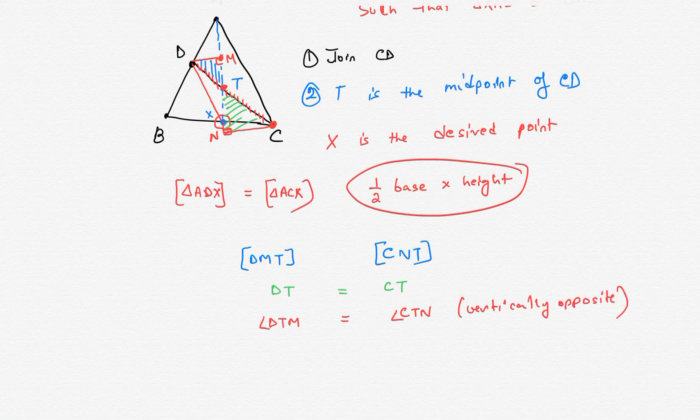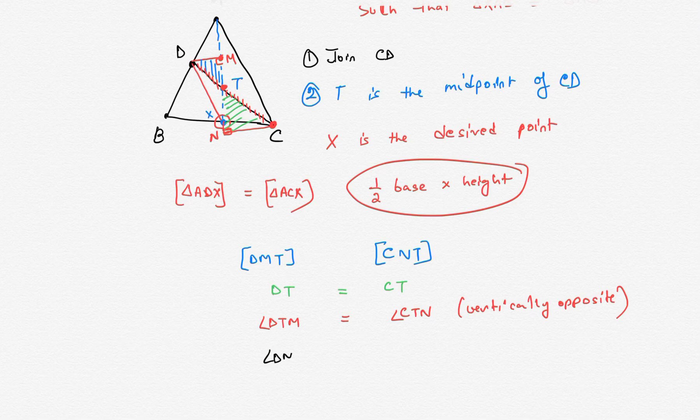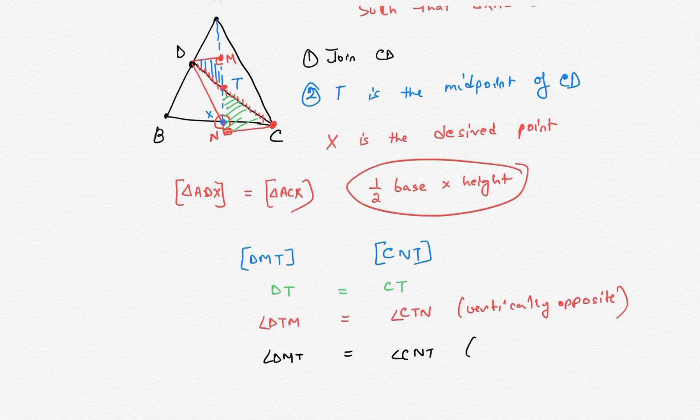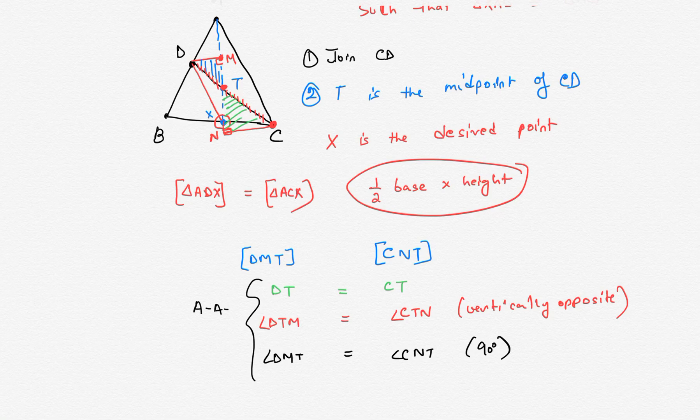And finally, we have angle DMT equals angle CNT. Both are 90 degrees. So we have angle-angle-side congruency. These two triangles are congruent.